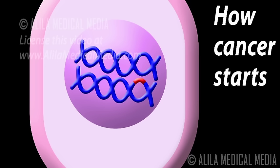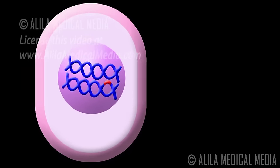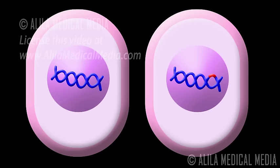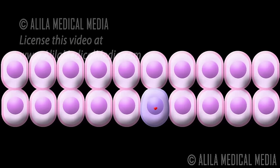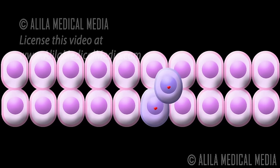These damages are usually detected and repaired before the cell can divide, but sometimes some of them may be ignored and transferred to daughter cells. If the mutation is located in one of many genes that control the cell cycle, it may affect the regulation of the cell cycle in the cell carrying it and make the cell divide faster than it's supposed to.